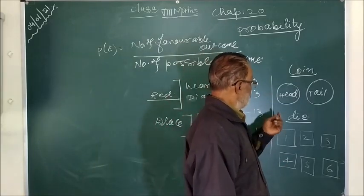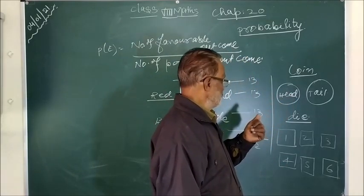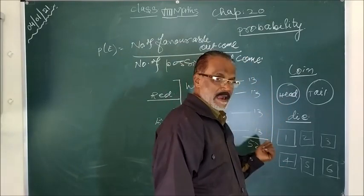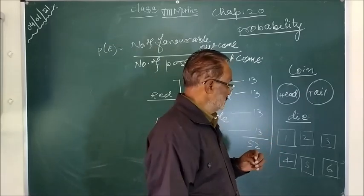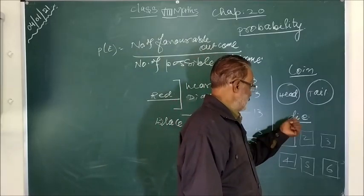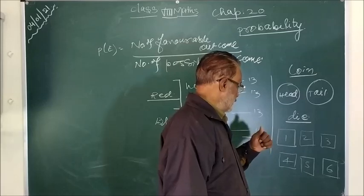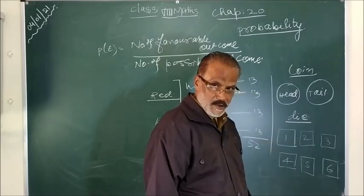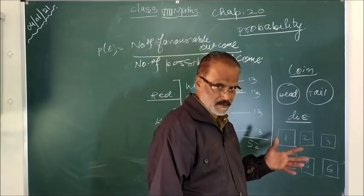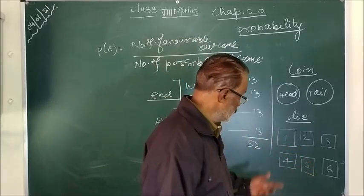So if you toss a coin, it is not sure whether it will be head or tail. If you roll a die, one will come up at the top. Either one or two or three or four or five or six, we don't know.